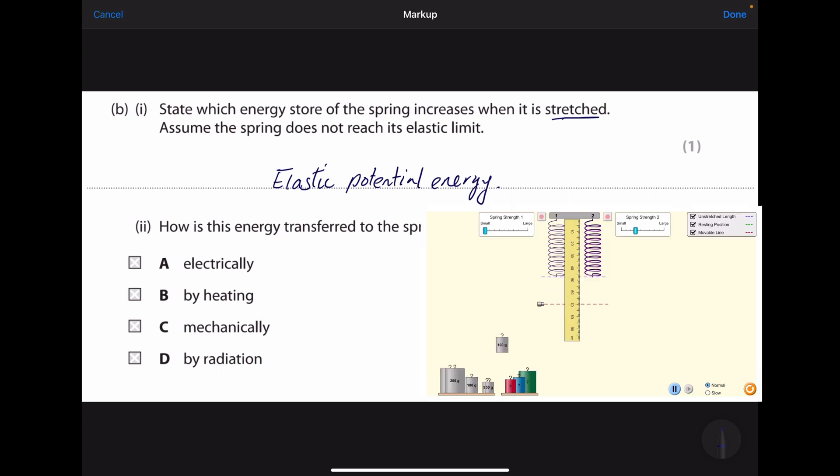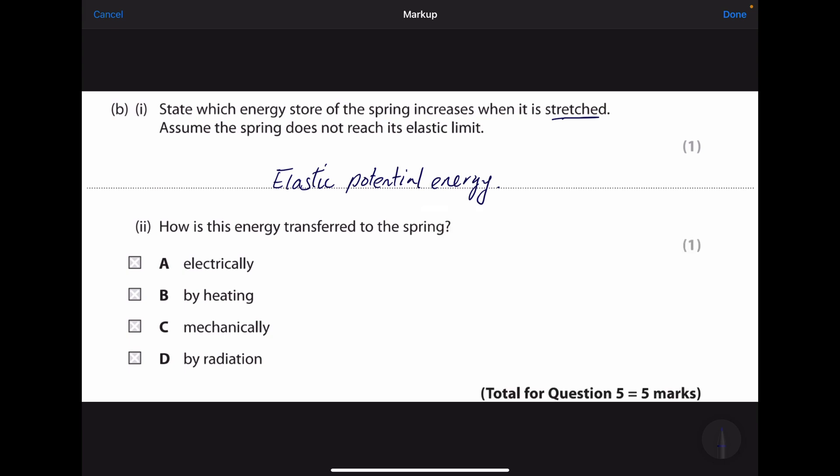How is this energy transferred to the spring? While adding loads of forces to the free end of the spring, the spring starts to vibrate up and down vertically or back and forth horizontally. As a result, mechanical energy is converted into elastic potential energy. The correct answer for part ii is mechanically.